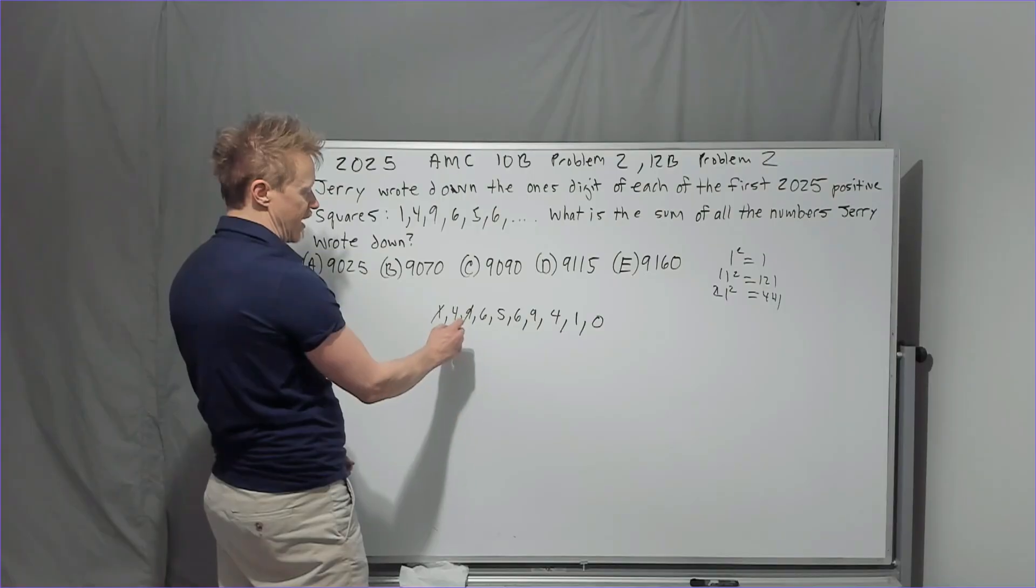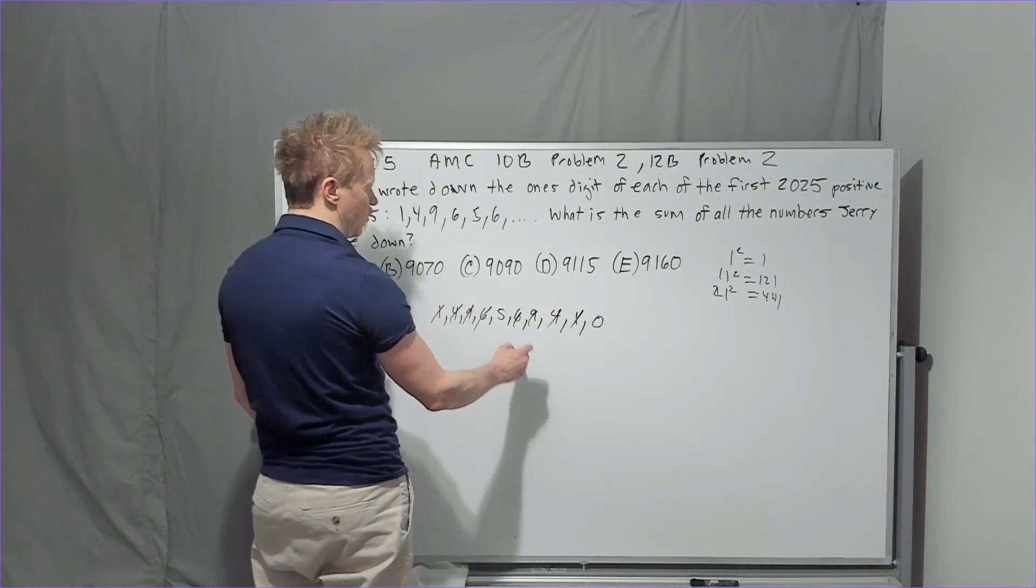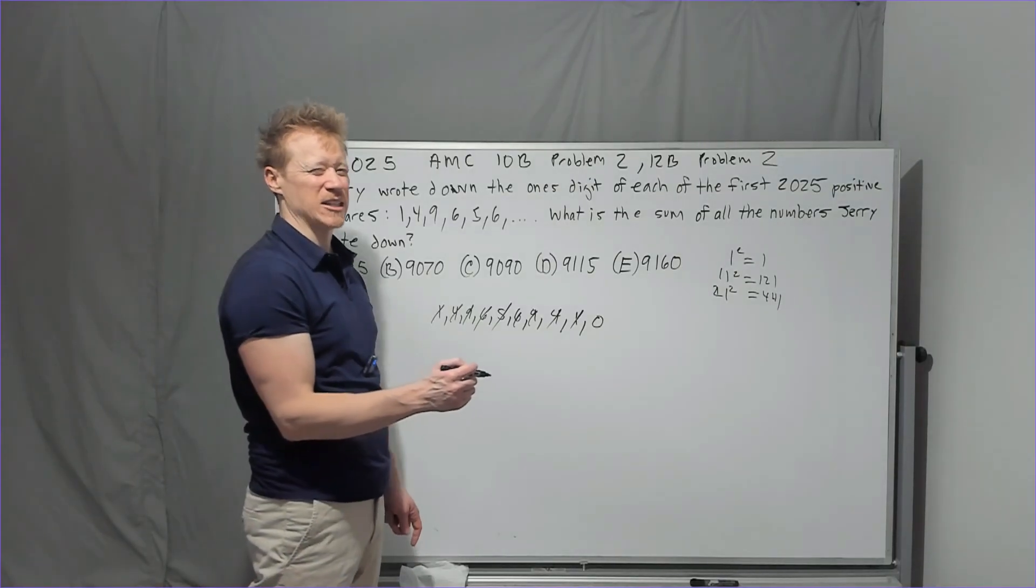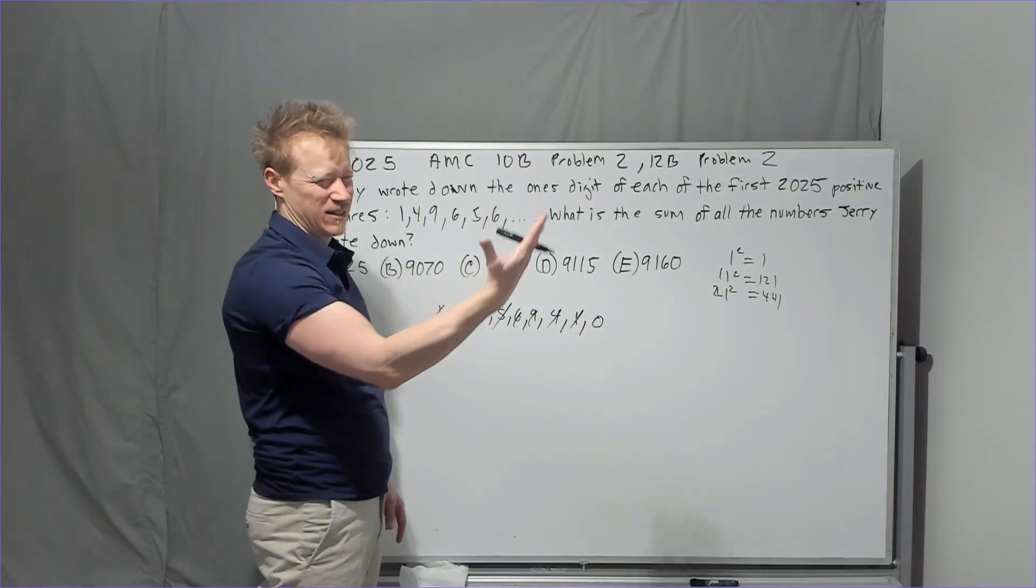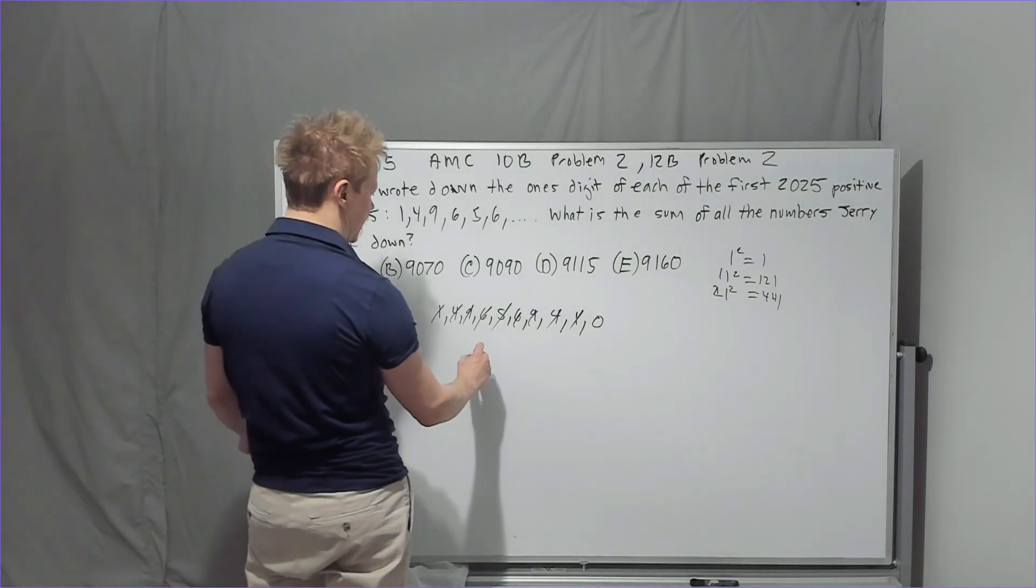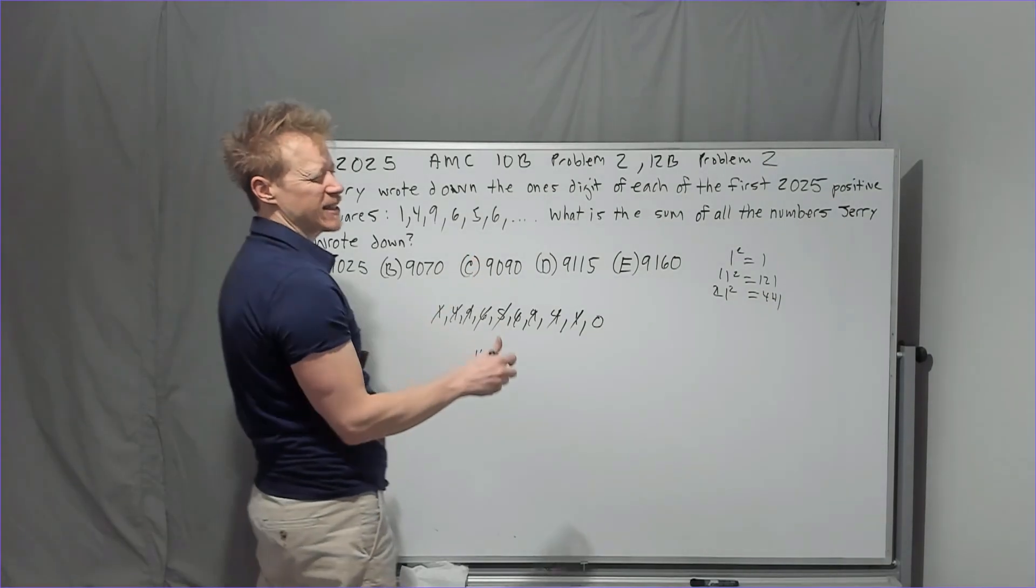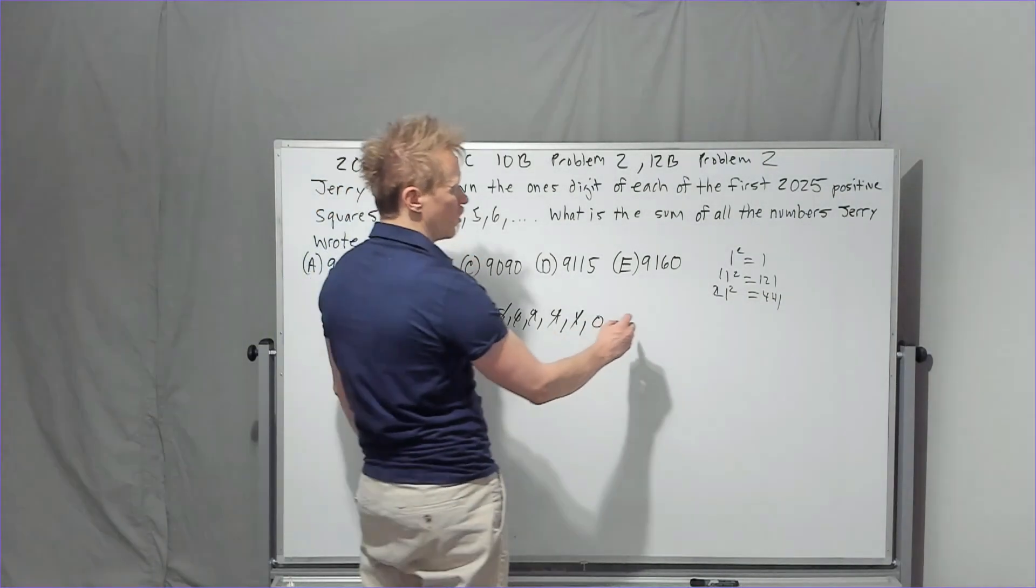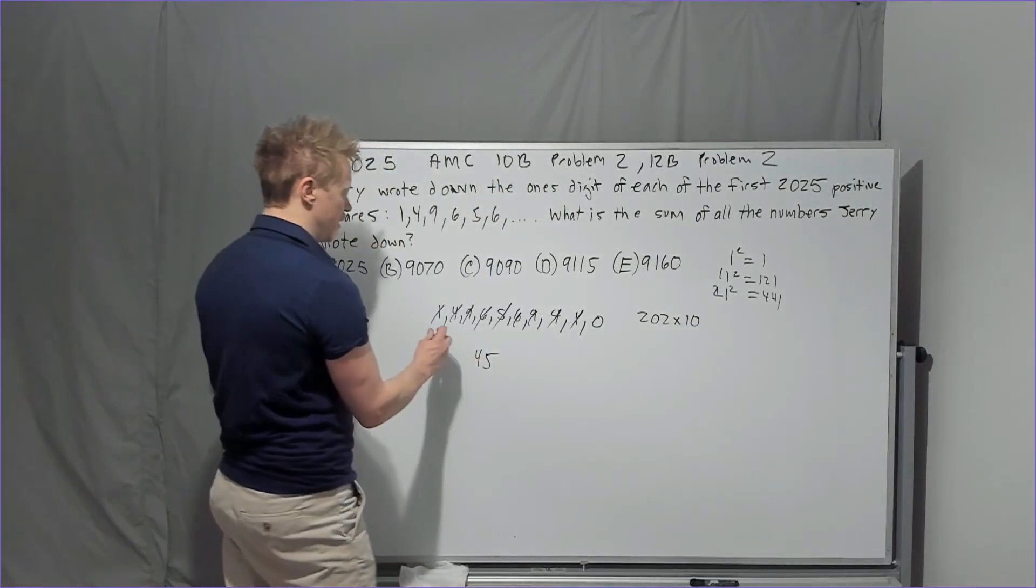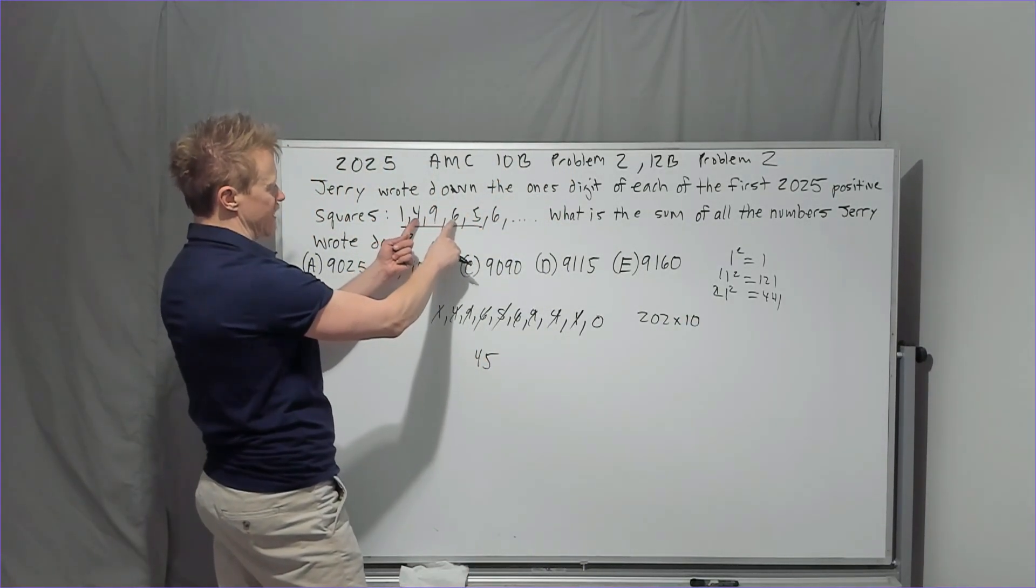So I'm just going to go 1 and 9 is 10, 4 and 6 is 10, 6 and 4 is 10, 9 and 1 is 10, and add one more. It's 5, which is very interesting that it's 45 because 2025. So the sum of this is 45. And that's every 10. How many 10s are we going to get? We're plus the same first five right here, which is 10, 25.